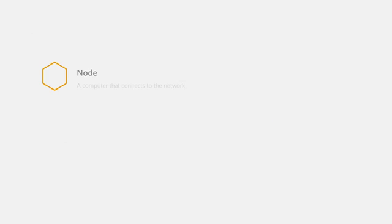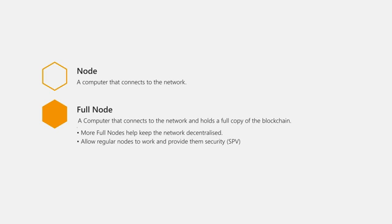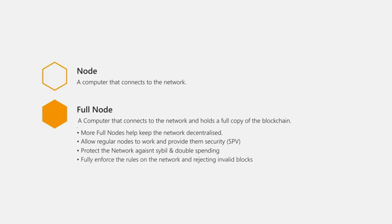A node is defined as any device that connects to the network, and a full node is one that possesses a full copy of the blockchain. These full nodes play an important role in helping keep the network decentralised, allowing mobile wallets to work through simple payment verification, and helping protect the network against Sybil and double-spending attacks. Most importantly, they enforce the rules and check each block mined to make sure it follows them.